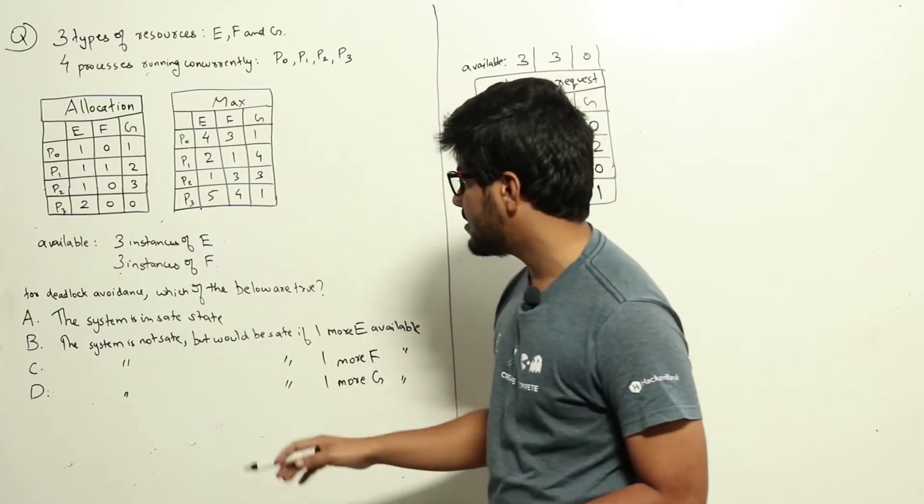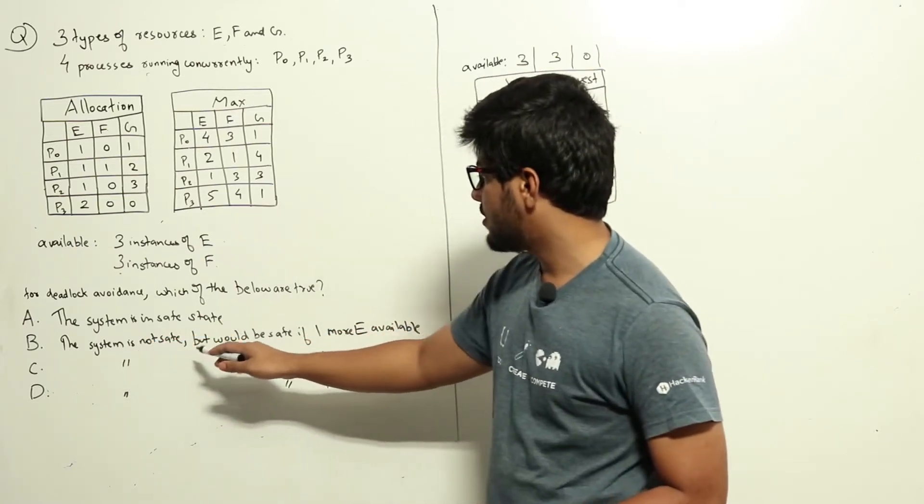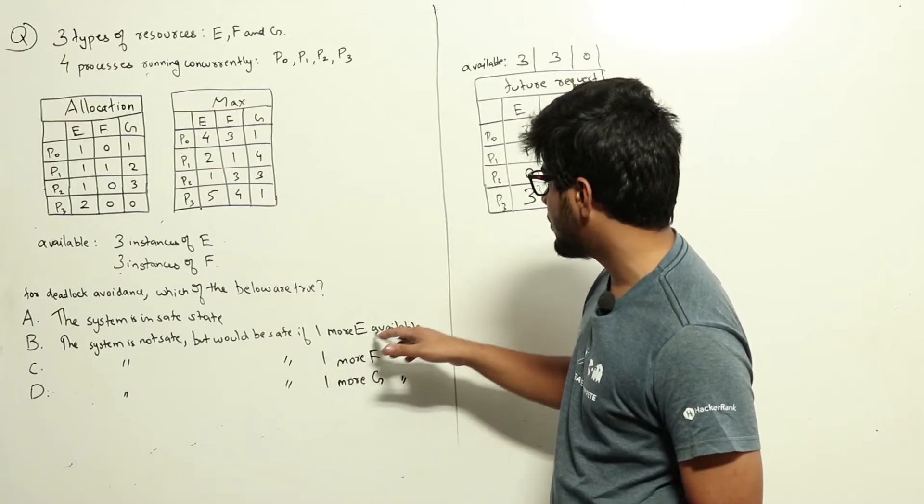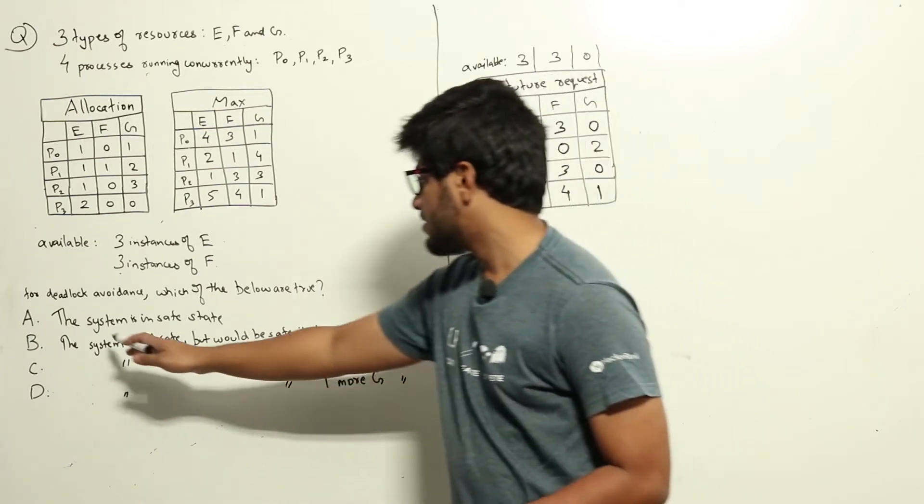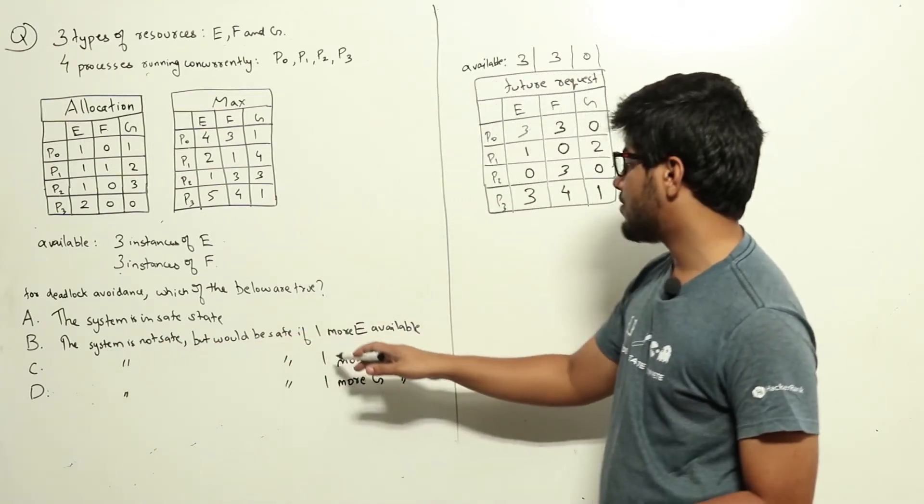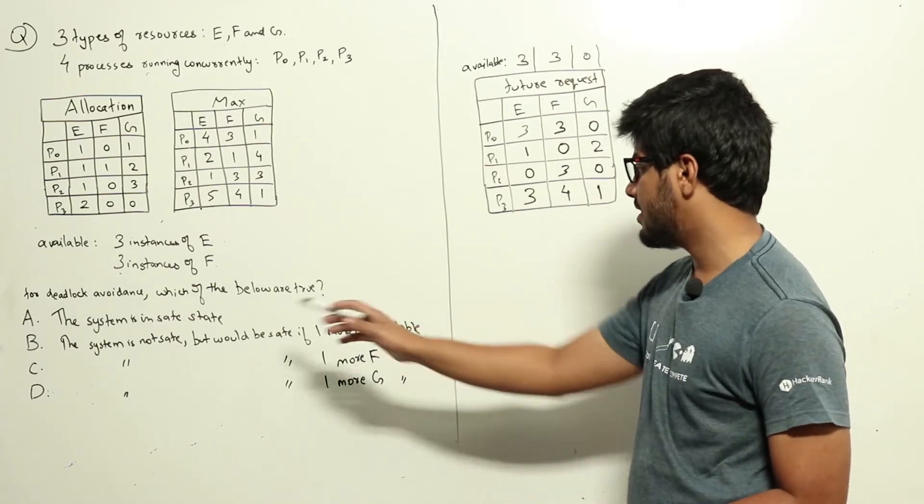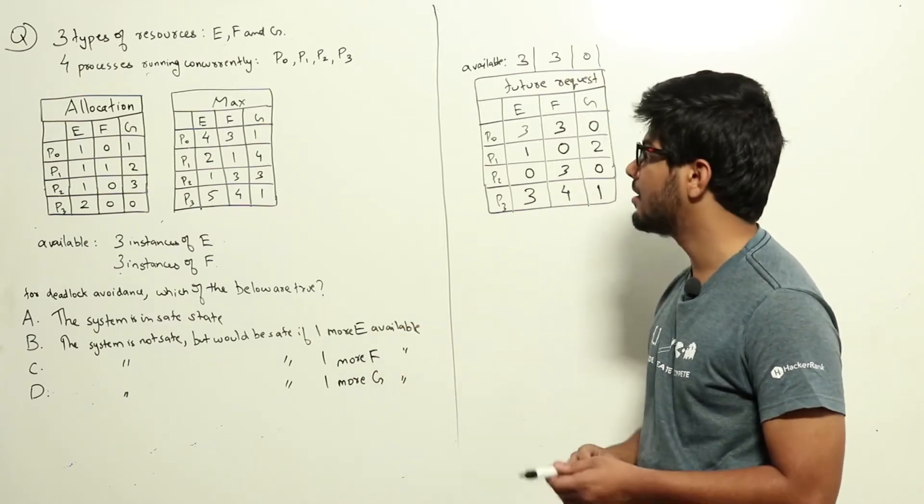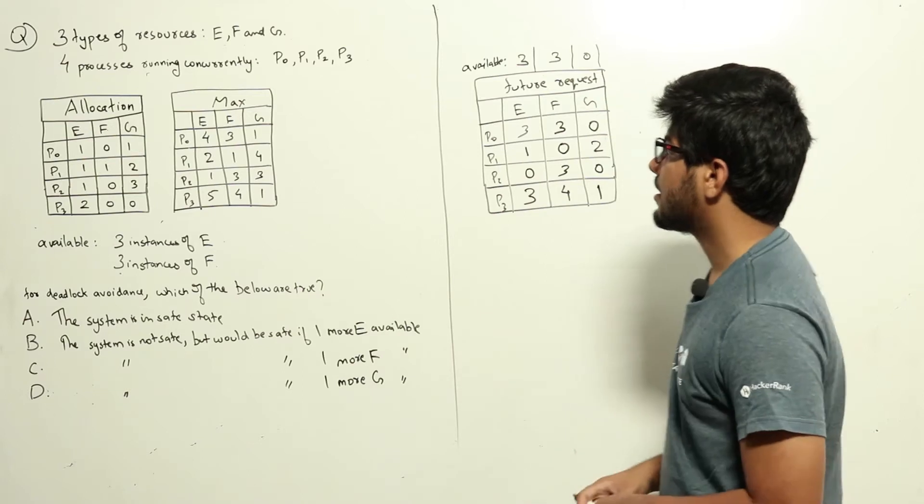Option A: the system is in safe state. Option B: the system is not safe but would be safe if one more instance of E is available. Option C: the system is not safe but would be safe if one more instance of F is available. Option D: one more instance of G is available. Let's see how to solve this.